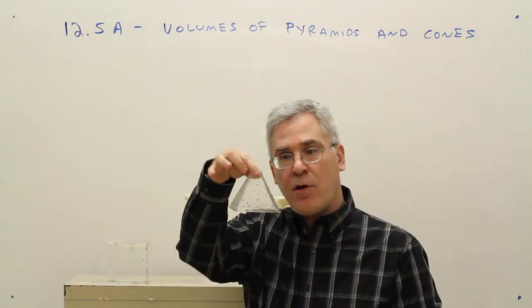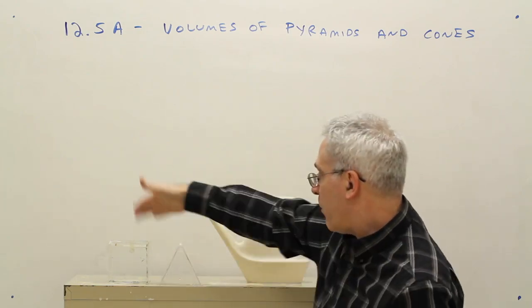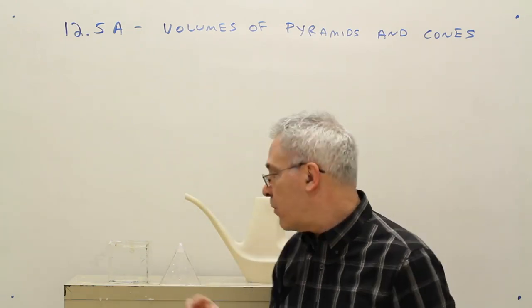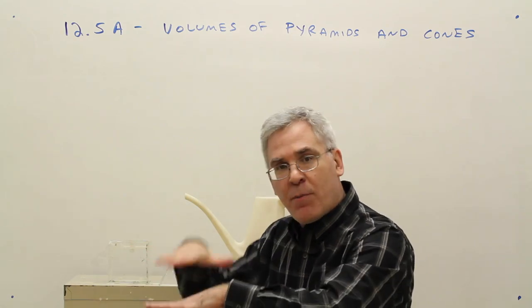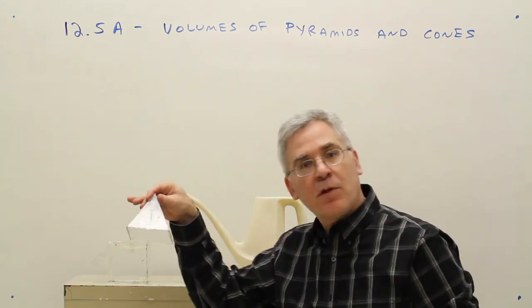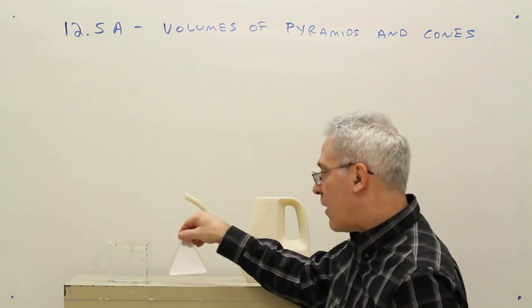So pretty much the volume of this square pyramid will be one-third of the associated cube. This cube was the area of the base times the height. So this will simply be one-third the area of the base times the height.